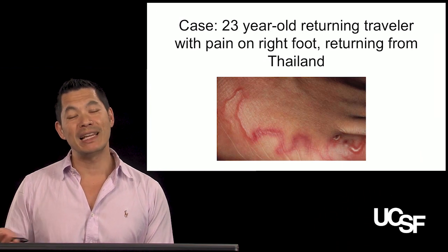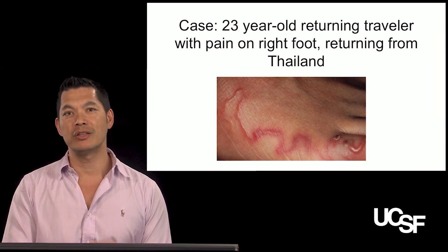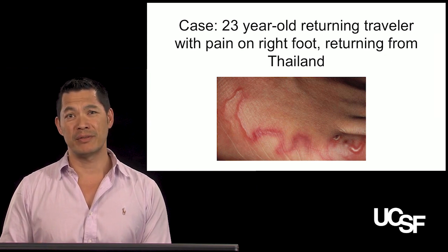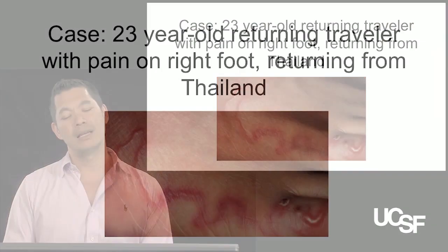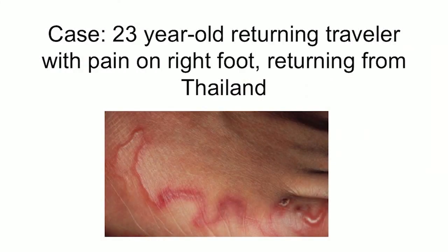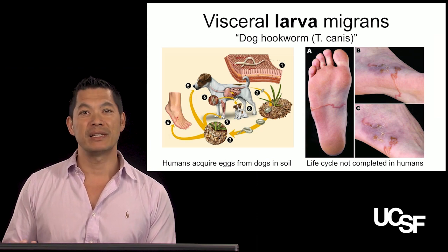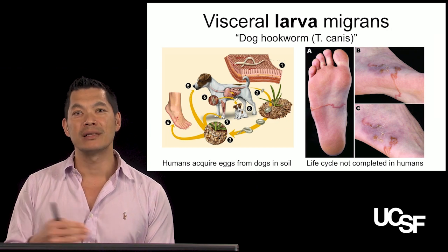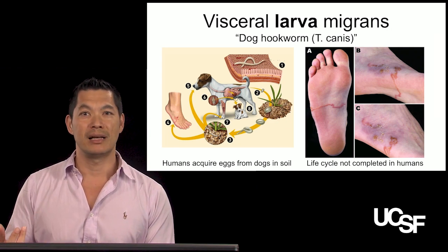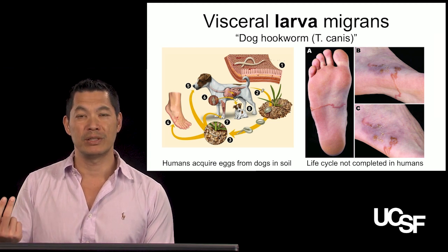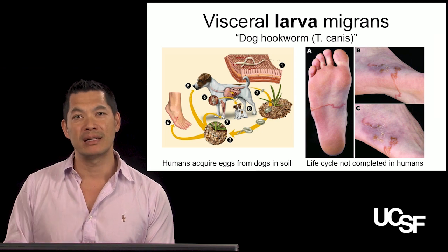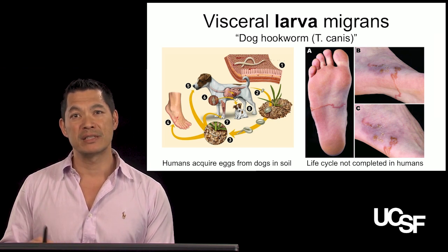Let's move on to a related case — this is a case of dog hookworm, not the human hookworm. This is a 23-year-old returning traveler with pain on the right foot returning from Thailand. You can see a worm-like object moving around on her feet, on the lateral aspect by her fifth toe. This is what we call visceral larva migrans — visceral because it's on the viscera, larva because that's the life stage, and migrans because it's migrating.